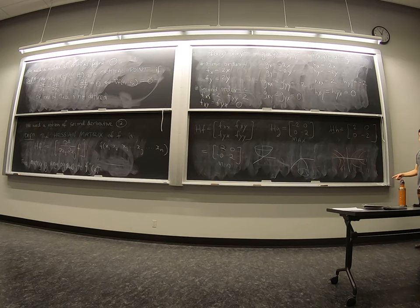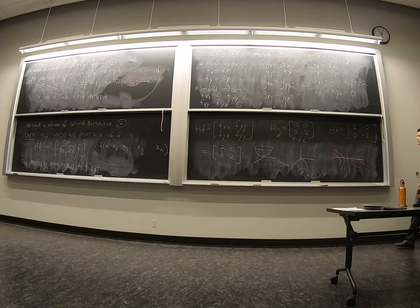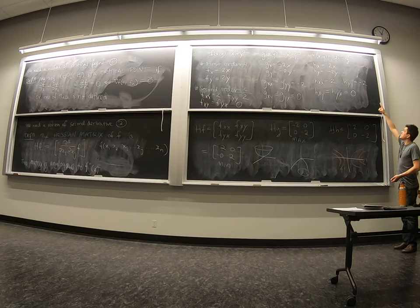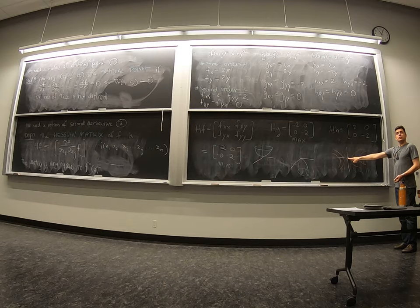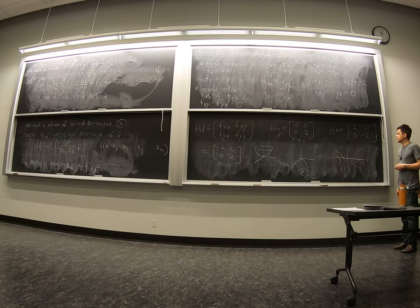Right, so if we draw the contour plot of this guy, because it's really hard to draw in 3D. You can see that this has a critical point at zero, but it's neither a min nor a max. Something very interesting is going on there.